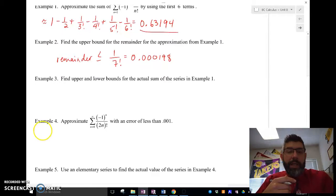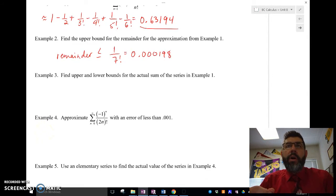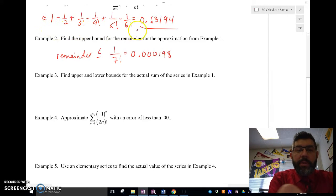So we're going to go and find the upper and lower bounds for the actual sum. So what does that mean, the actual sum? Well, I don't know what the actual sum is, but I do know that the actual sum is going to be